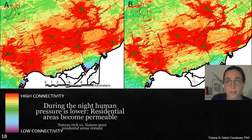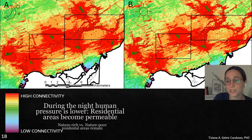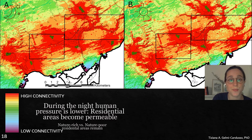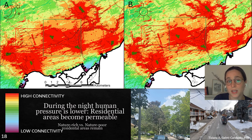Zooming in to the most connected patches, we can see the difference between day and night. We see high connectivity because there is a high network of railways, hydrolines, and ravines, and vegetation is high here. The difference between day and night is seen in residential areas: in residential areas, when people go to sleep, human pressure is relieved and space becomes available for animals to move. Our connectivity analysis reflects this quite nicely. Most interesting is the difference between nature-rich residential areas and nature-poor residential areas — the landscape becomes more permeable during night in both, but the difference remains. Vegetation creates a big difference in connectivity even in residential areas where human pressure is present.